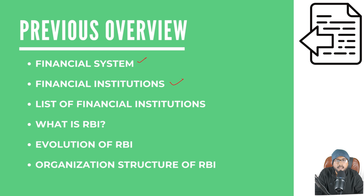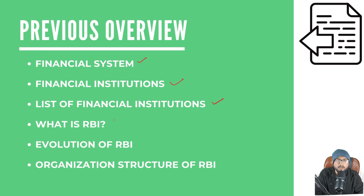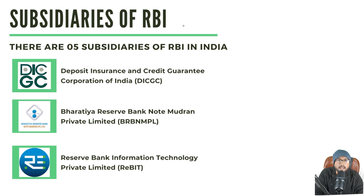The first component is the financial institution. We discussed the definition of financial institutions and the number of financial institutions in India, which is 10. We also discussed the Reserve Bank of India as the first financial institution and the organizational structure of RBI.